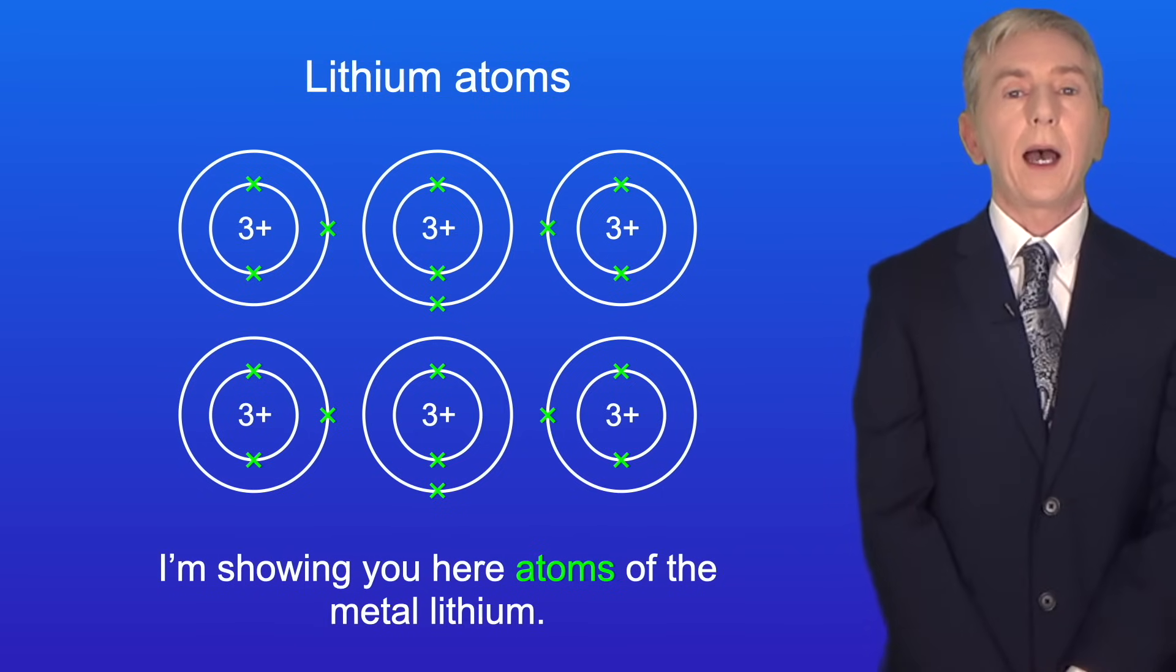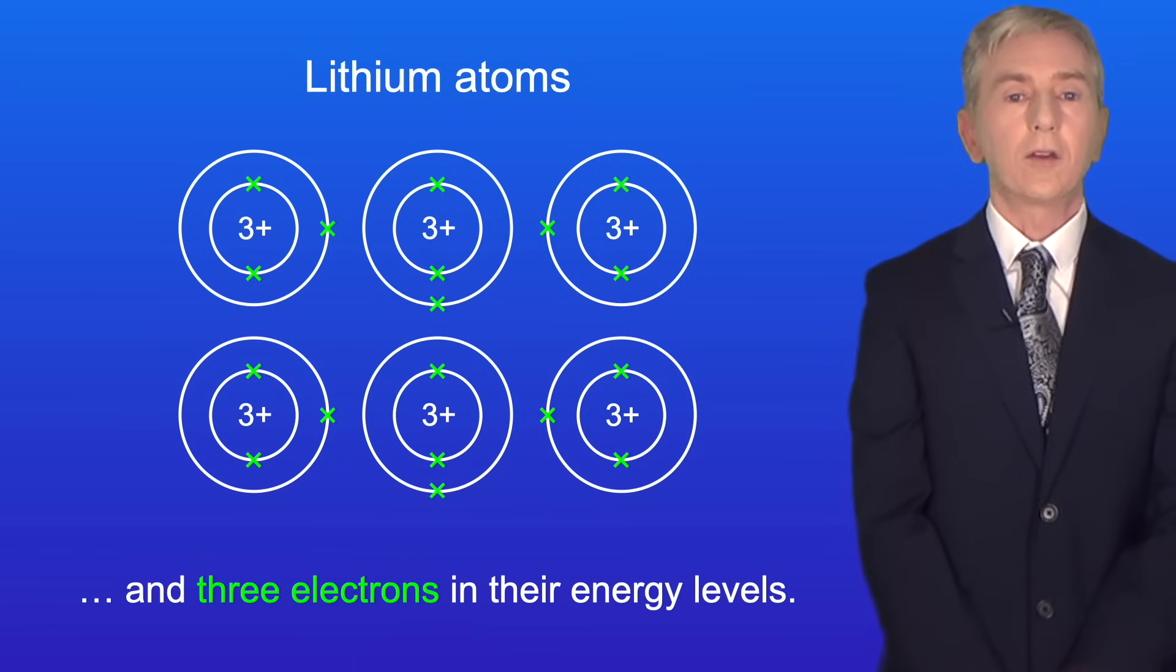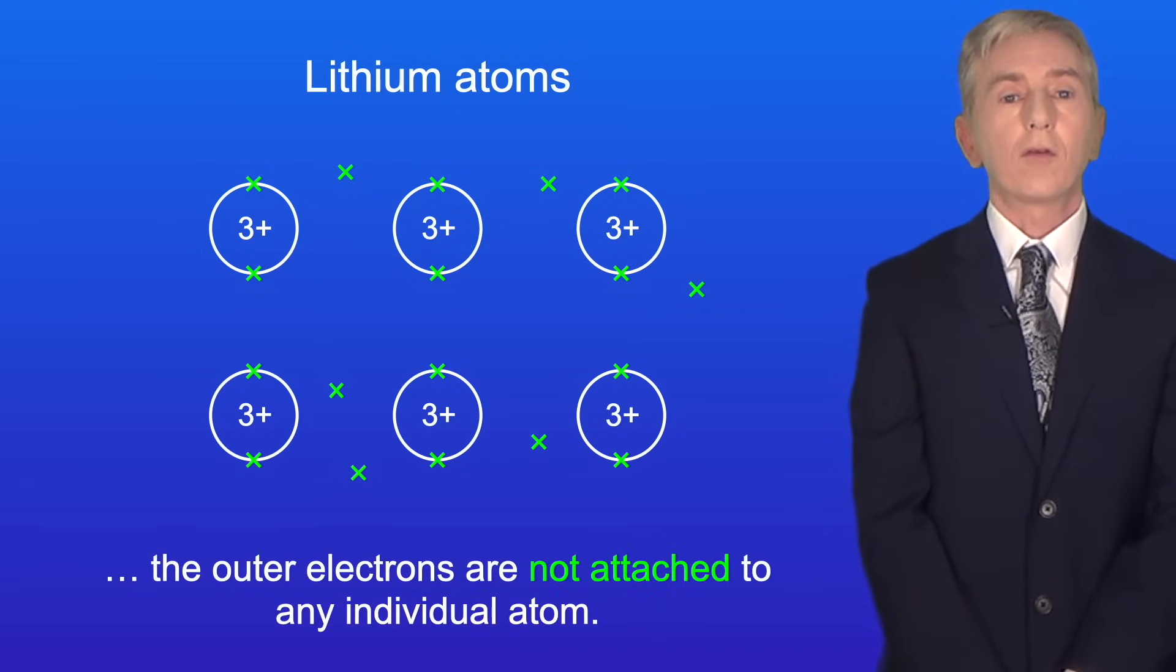I'm showing you here atoms of the metal lithium. Lithium atoms have three protons in their nucleus and three electrons in their energy levels. Now the key fact is that in metals the outer electrons are not attached to any individual atom.